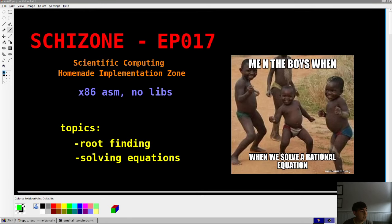Hey guys, welcome back. Skit Zone, episode 17. Topic today is root finding, aka solving equations. You know, p-brains like me, we can subtract 2 from both sides to solve an equation, but how does a computer do that? That's today's video. It should be a short one, so stick around.